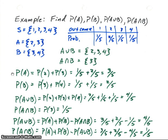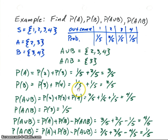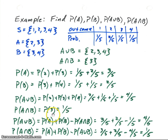Since the elements of A are mutually exclusive, P(A) is just the sum of probabilities of each element. P(2) = 2/5 and P(3) = 1/5, so the total P(A) = 3/5. For P(B), which contains 3 and 4, it's 1/5 plus 1/5 = 2/5. For P(A union B), the set {2, 3, 4} has probabilities summing to 4/5. And P(A intersect B), the set {3}, has probability 1/5.